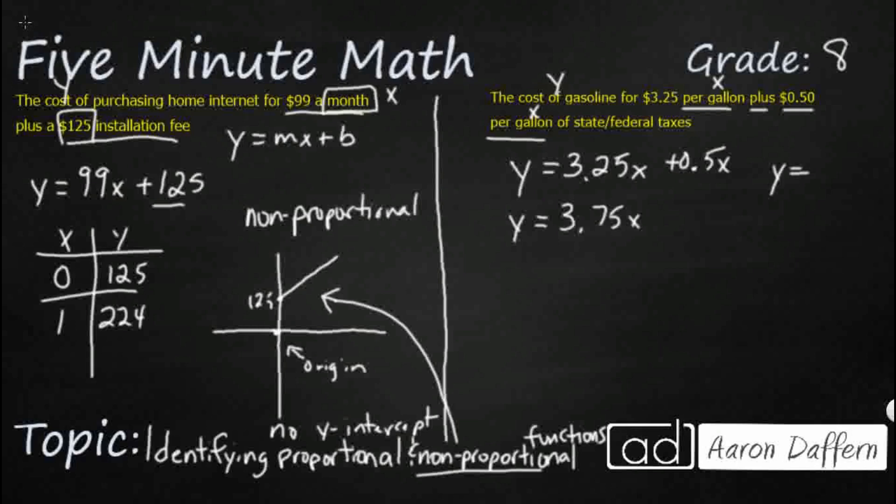And this takes the form of direct variation, y equals kx. And if we have direct variation, that means it's going to be proportional because there is no y-intercept. It goes through the origin.